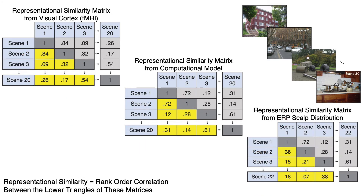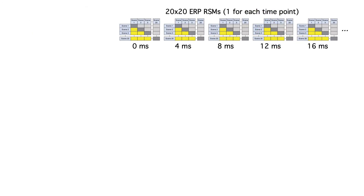We could also have subjects view these 20 scenes while we record the EEG. We could then make an average ERP for each scene and calculate the similarity between each pair of scenes in terms of the ERP data. To take advantage of the millisecond-level temporal resolution of the ERP data, we could do this separately for each time point. For each time point in an average, we can compute a scalp distribution, and then get a 20 by 20 RSM for that time point by computing the correlation between the scalp distributions for each pair of scenes. At a sampling rate of 250 Hz — one sample every 4 ms — we'd get a separate RSM for each time point.